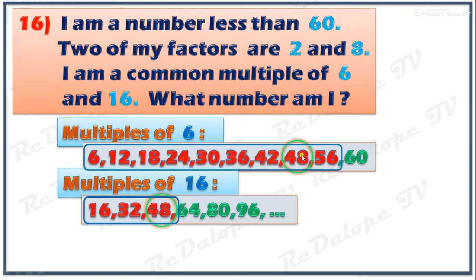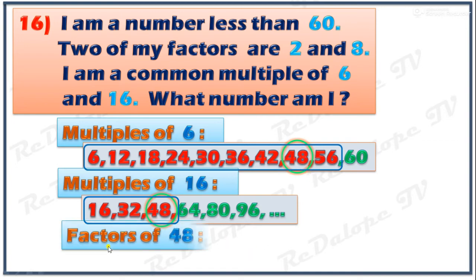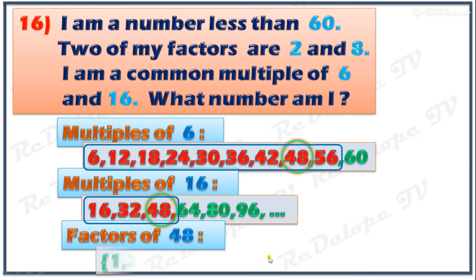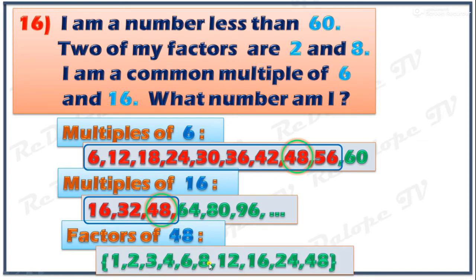To verify that 48 is correct, let's find the factors of 48: 1, 2, 3, 4, 6, 8, 12, 16, 24, and 48. As we observe, 2 and 8 are both factors of 48. Therefore, 48 is confirmed as the final answer.